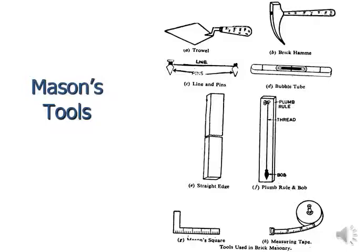The trowel is used for placing plaster, making joints between courses, and for leveling purposes. The brick hammer has a sharp edge on one side to break bricks into parts. Lines and pins are inserted at two locations with a line between them to provide horizontal leveling, ensuring courses are aligned. For similar leveling you can also use a bubble level.